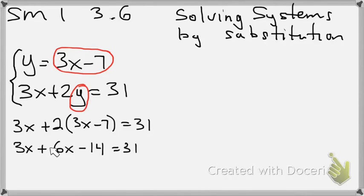So now I'm going to combine like terms. So since they're on the same side, I just add them together. So that would be 9x minus 14 equals 31.